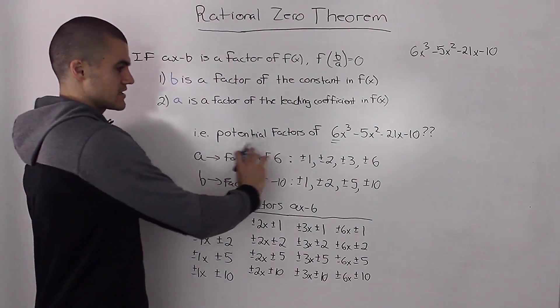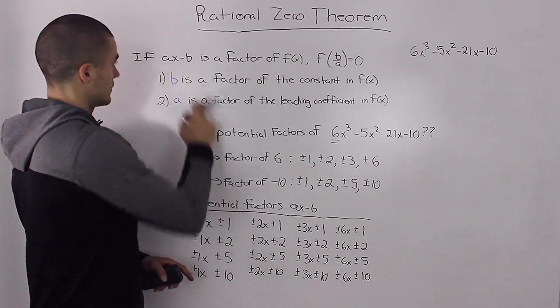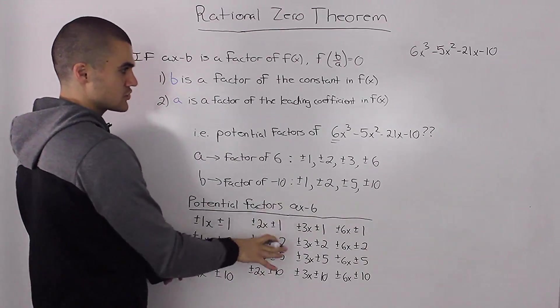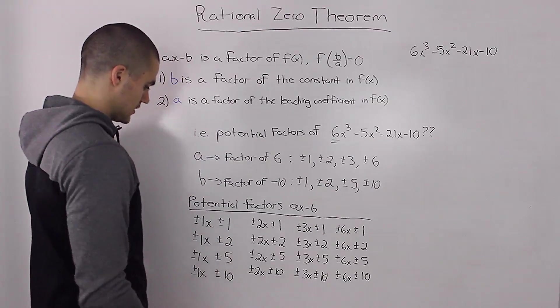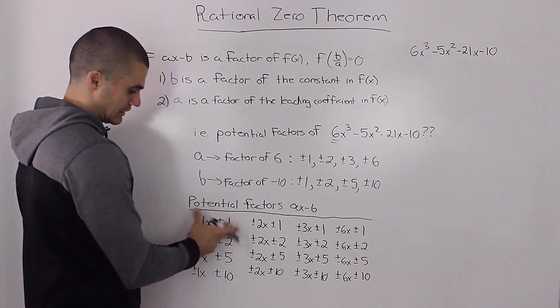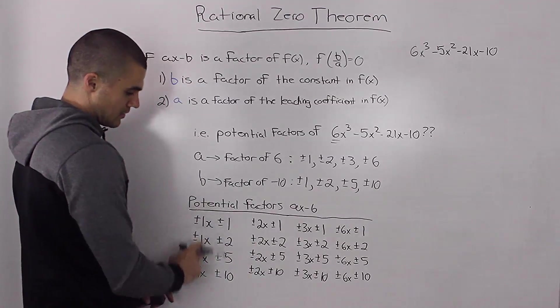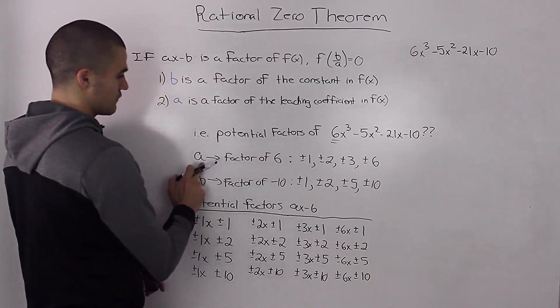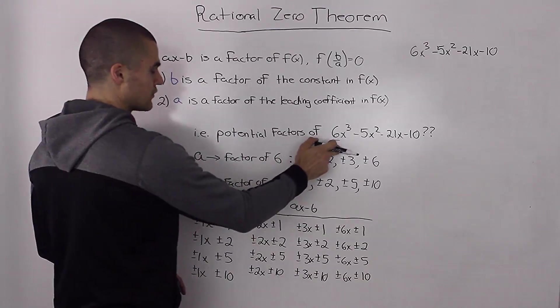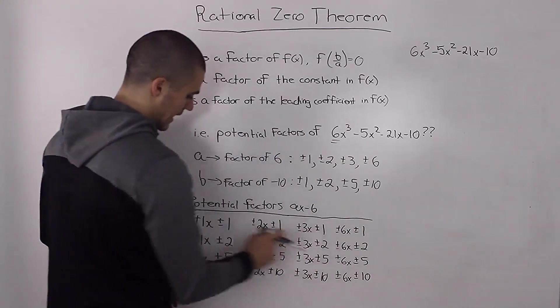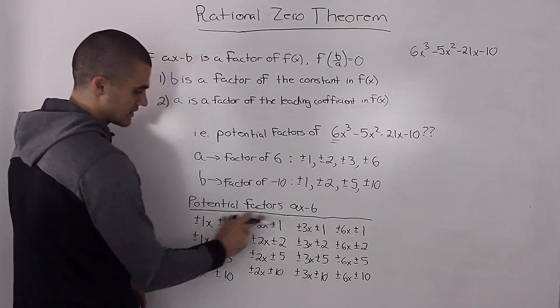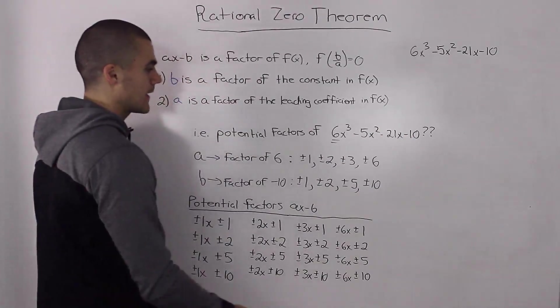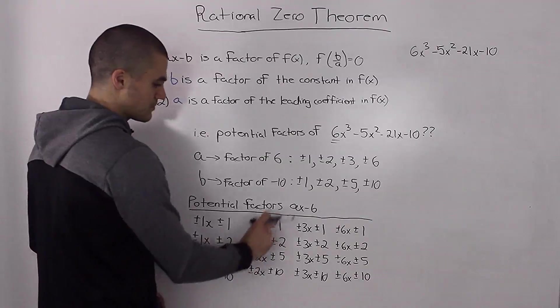Now taking all of these individual factors of a and b, and then combining them into the ax minus b form, we get a list of all of these potential factors for our polynomial. Notice how all of these factors are linear, and the numbers attached to the x are factors of our leading coefficient—those are our a values. And our constants in these linear factors are factors of the constant in the dividend—they are our b values.